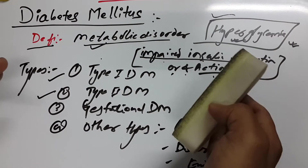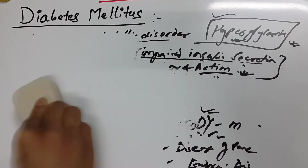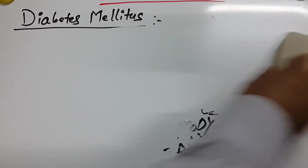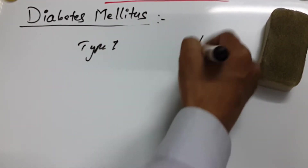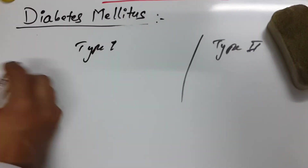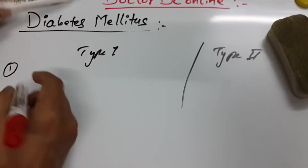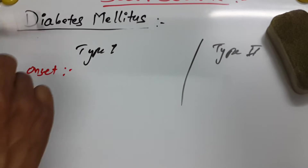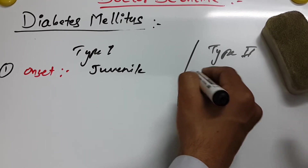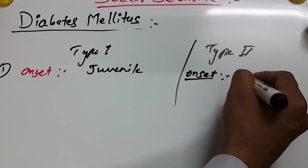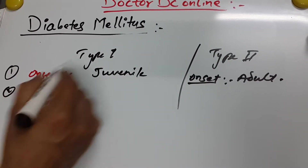Now let's differentiate Type 1 and Type 2 diabetes mellitus, which is very important for diagnostic and pharmacological purposes. Regarding onset: Type 1 onset is juvenile, occurring in children, whereas Type 2 onset is in adults — adult onset.